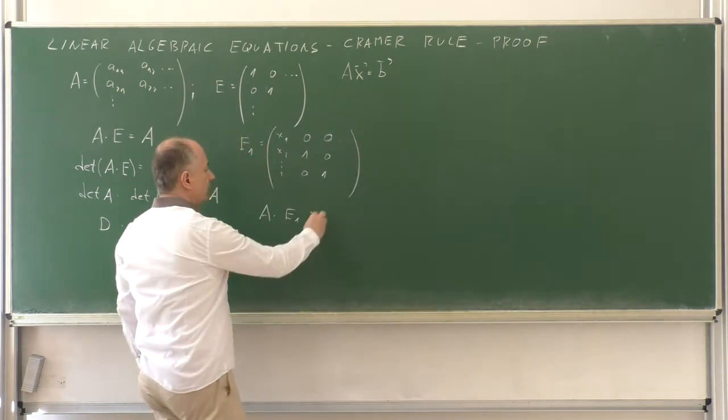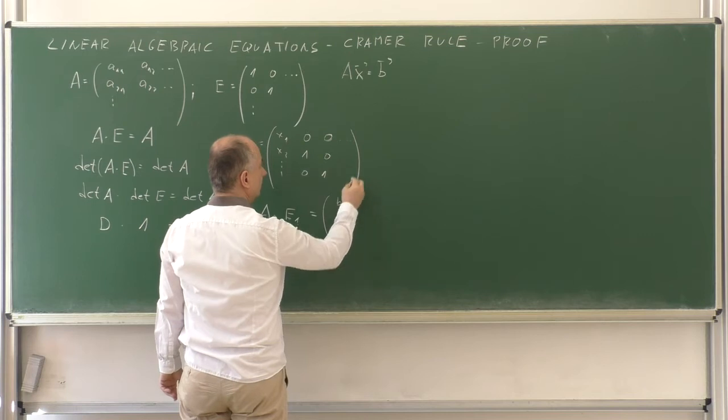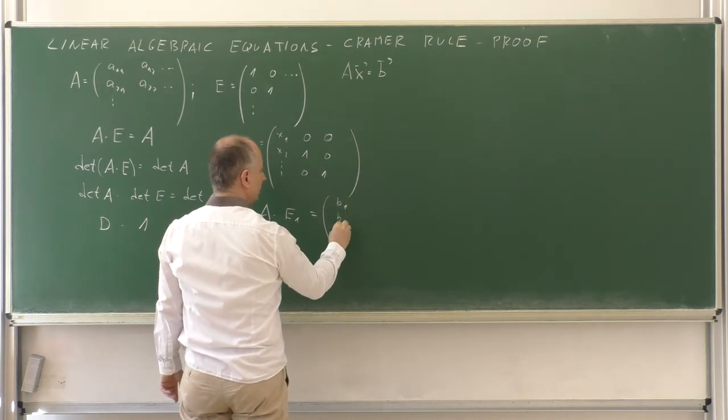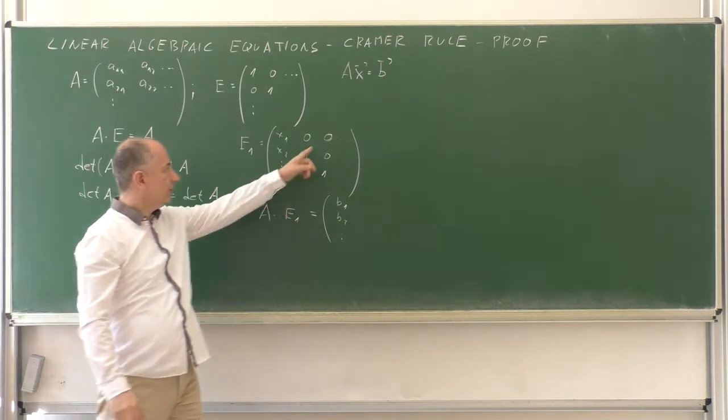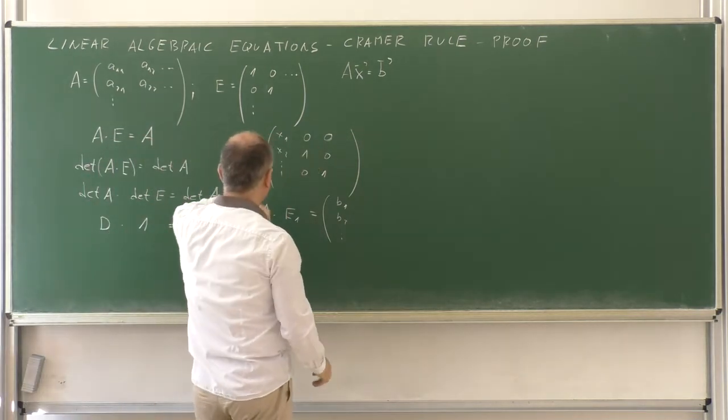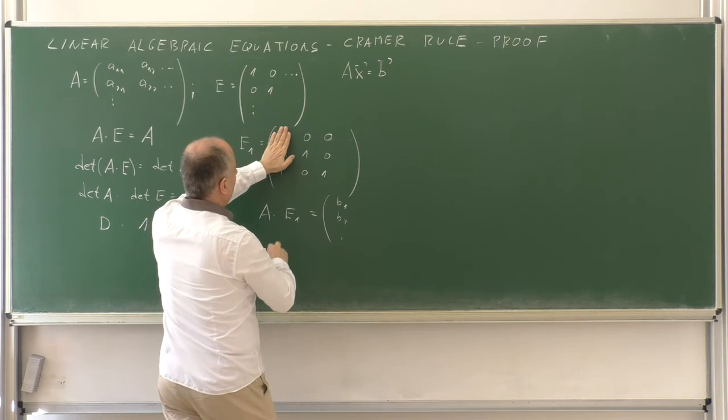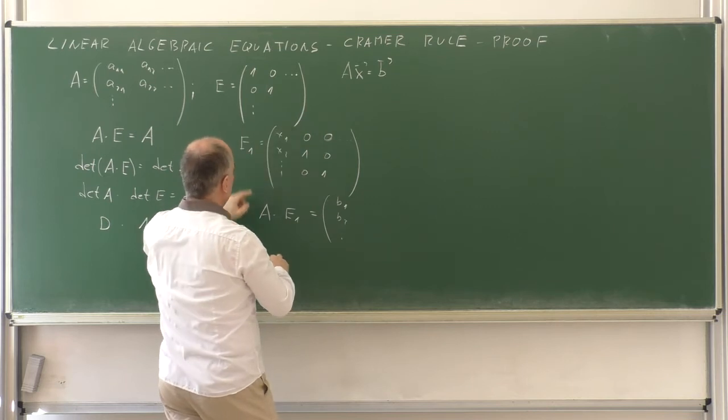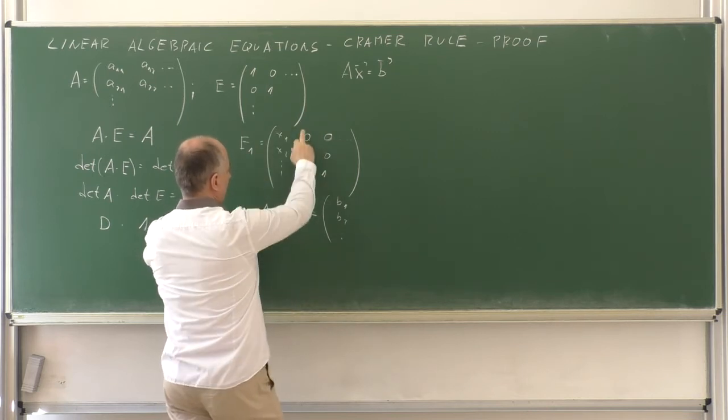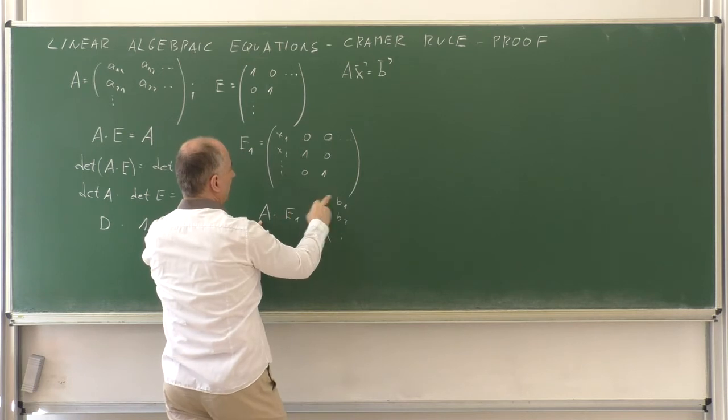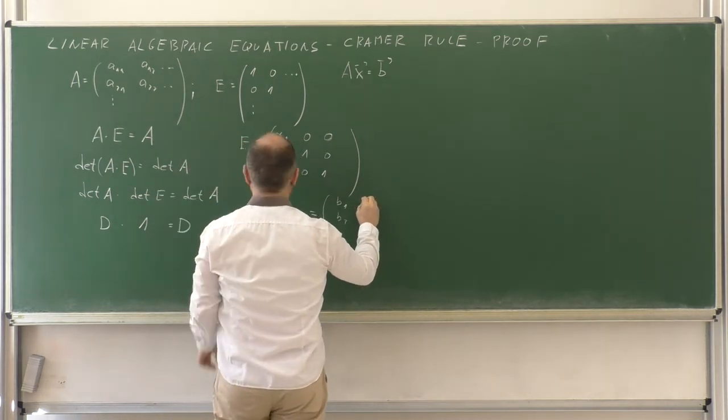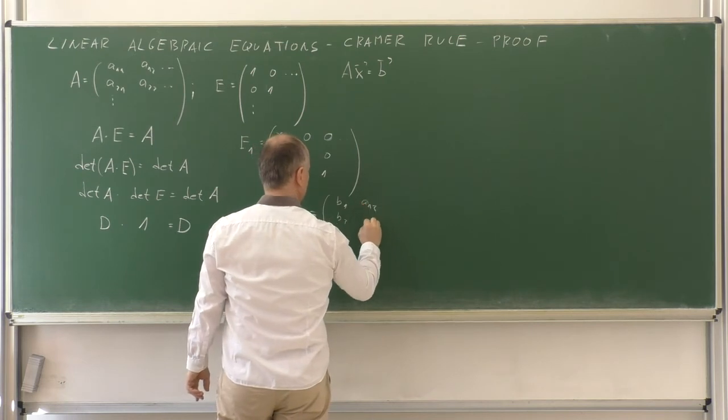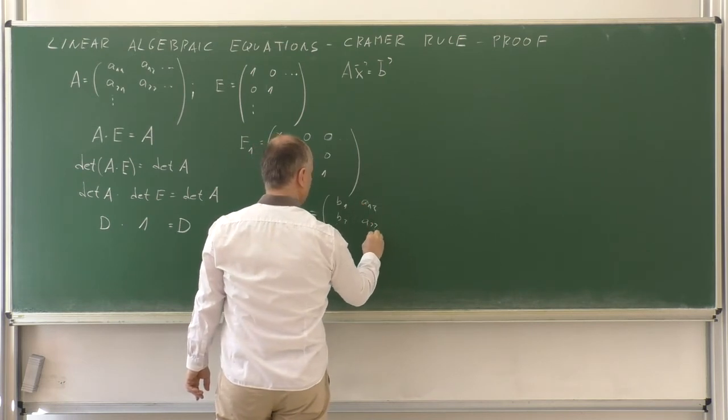So, the first column of the resulting matrix will be the right hand side, B1, B2, and so on. And the remaining is the same. The remaining is the same in the sense that as if no change were here. So, A times the second column here is the second column of A. That means A12, A22, and so on.